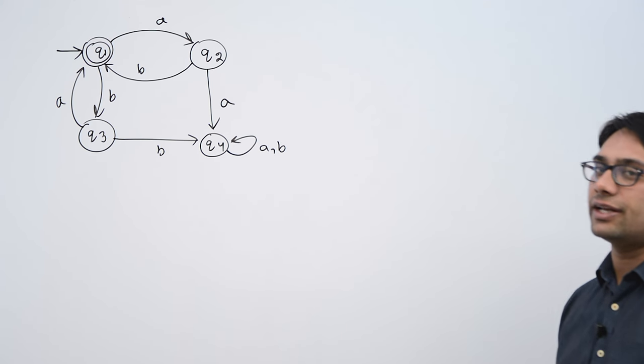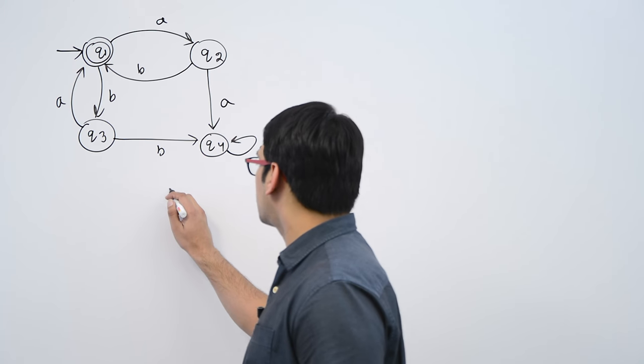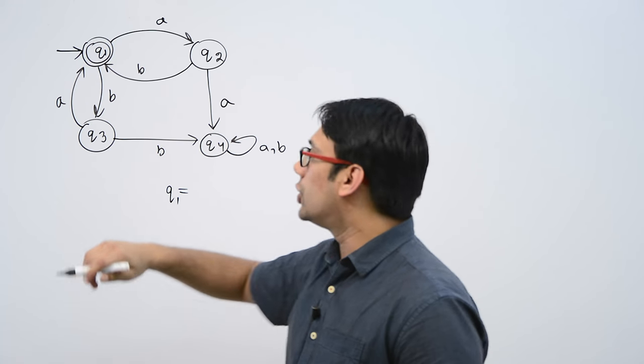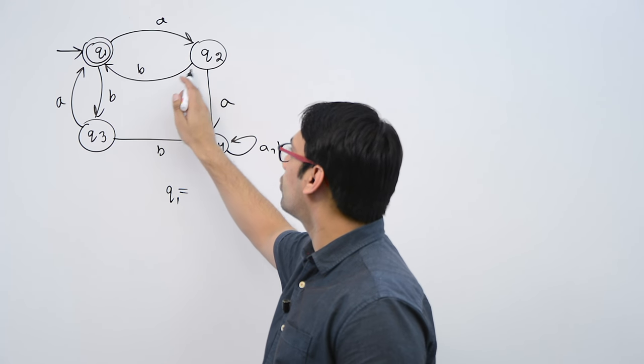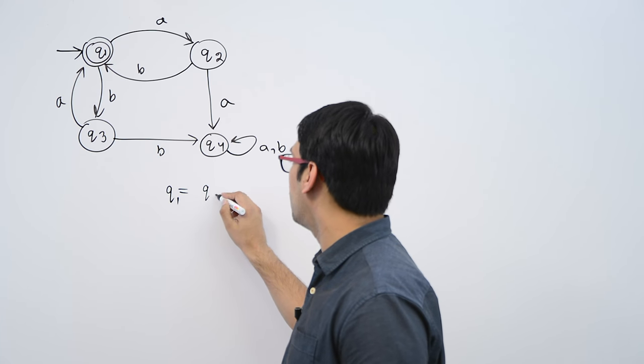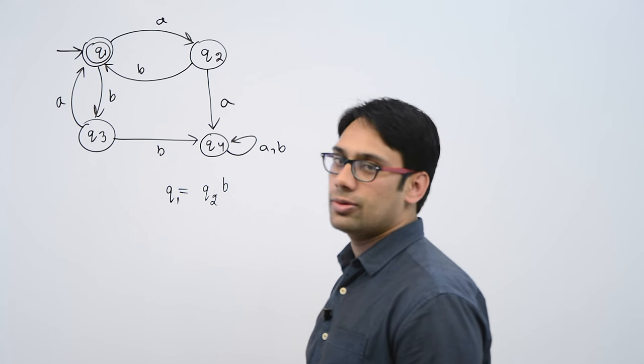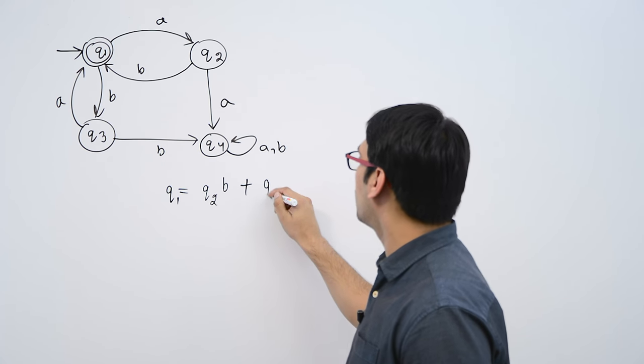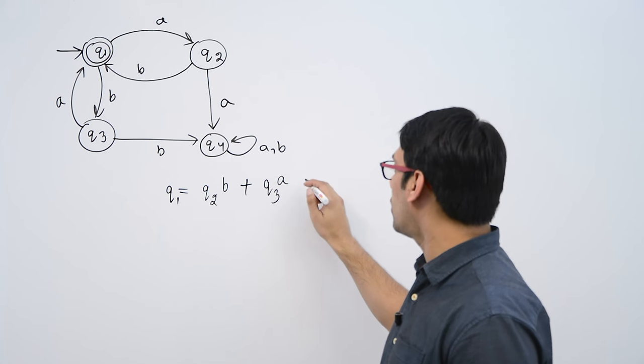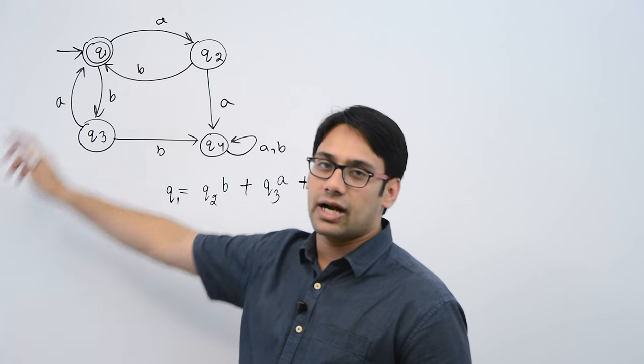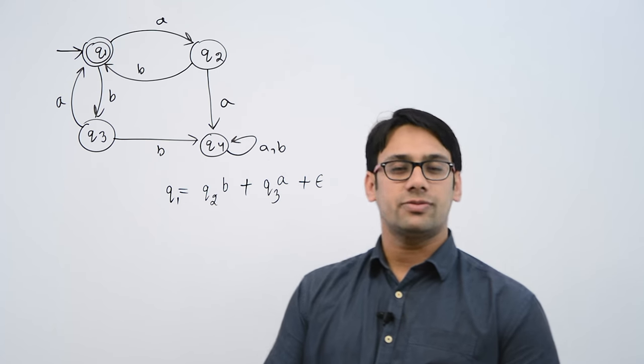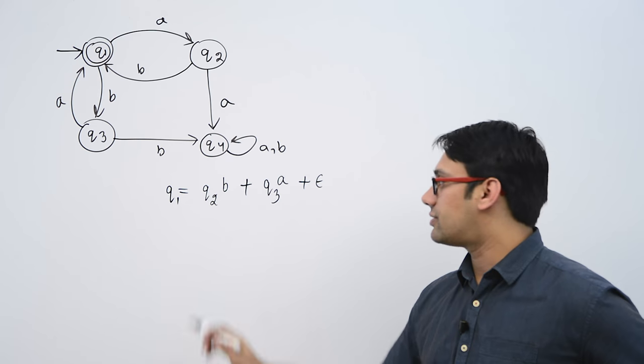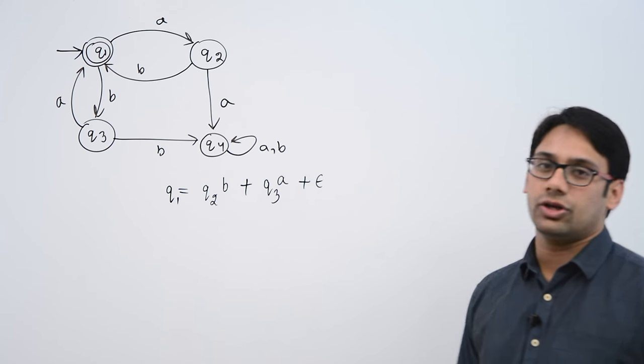Secondly, for every state you have to write an expression. Like for example, q1: if this q1, how can you reach to q1? You can reach to the state q1 if you get b from q2 or if you get a from q3 or you get epsilon, that means you are at the start state without just by seeing epsilon you will be staying at the same state. So you can reach q1 by seeing b at q2 or a at q3 or epsilon.